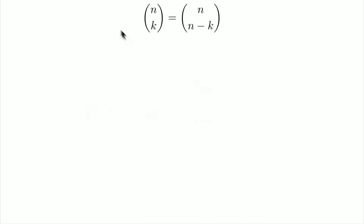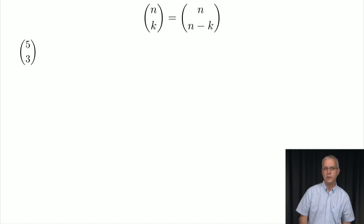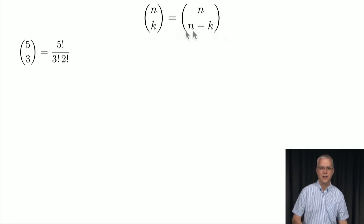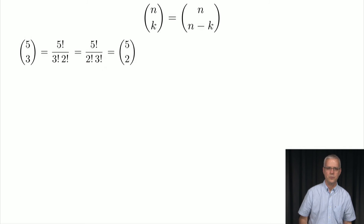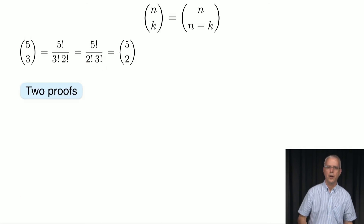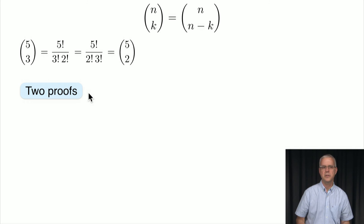First, we want to show that n choose k equals n choose n minus k. For example, 5 choose 3 is 5! divided by 3! times 2!, and that's the same as 5! divided by 2! times 3!, which is 5 choose 2. So we can see this is true for 5 choose 3 and 5 choose 2. We want to show it in general, and we'll give two proofs — both simple.